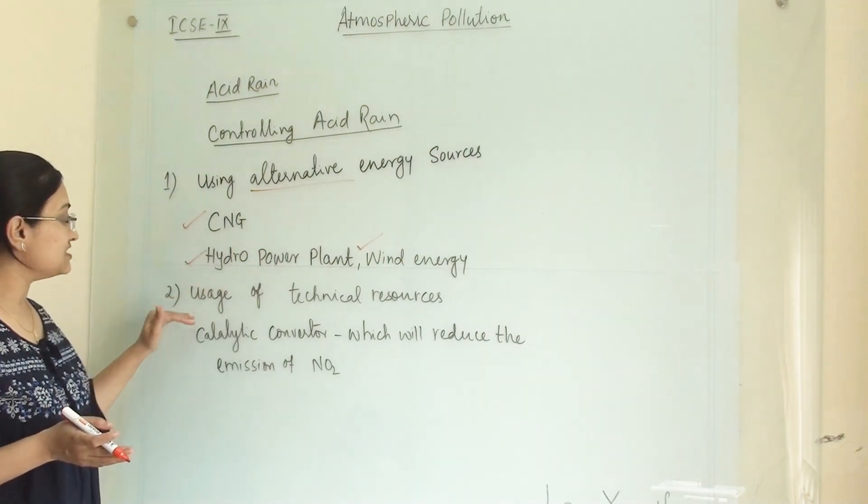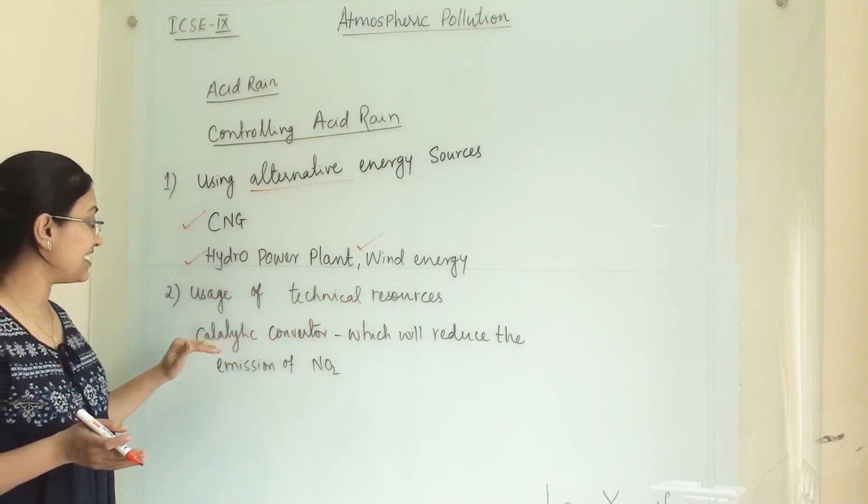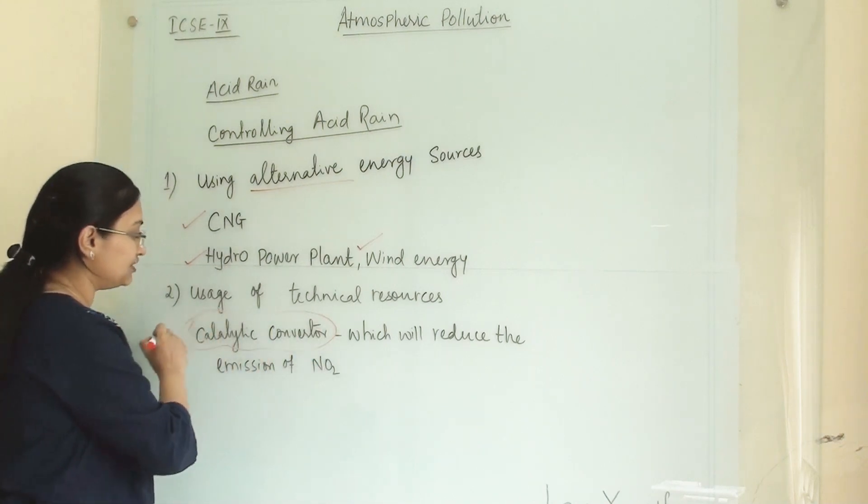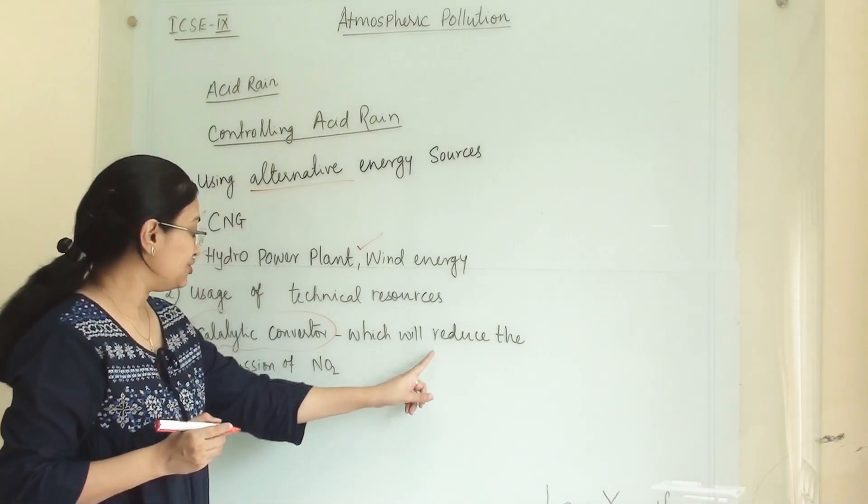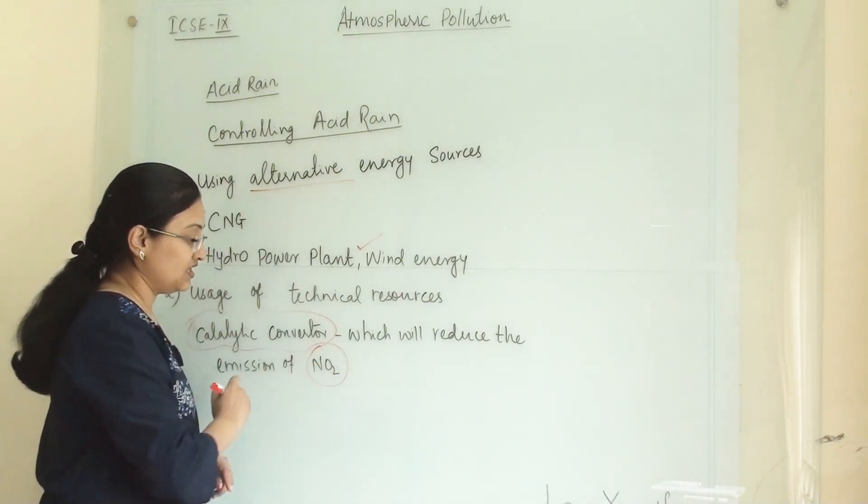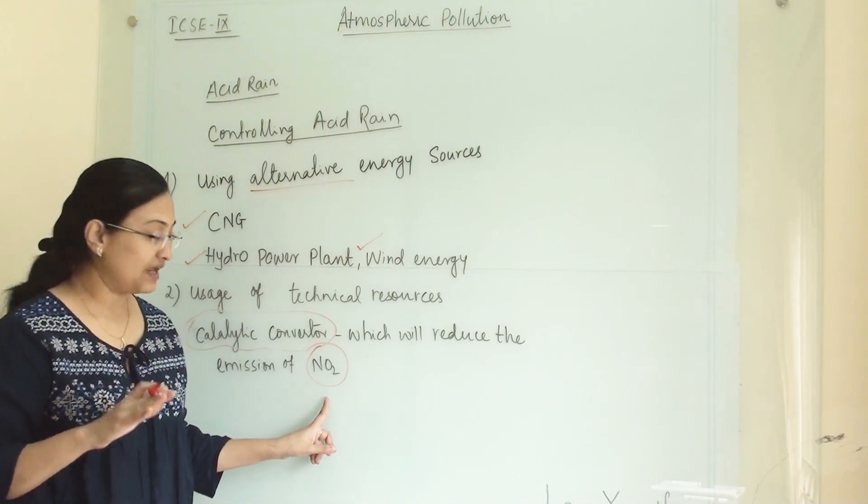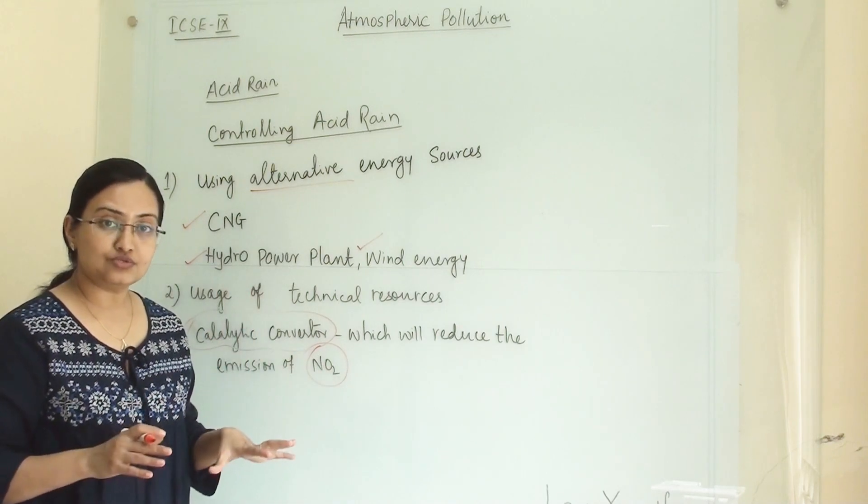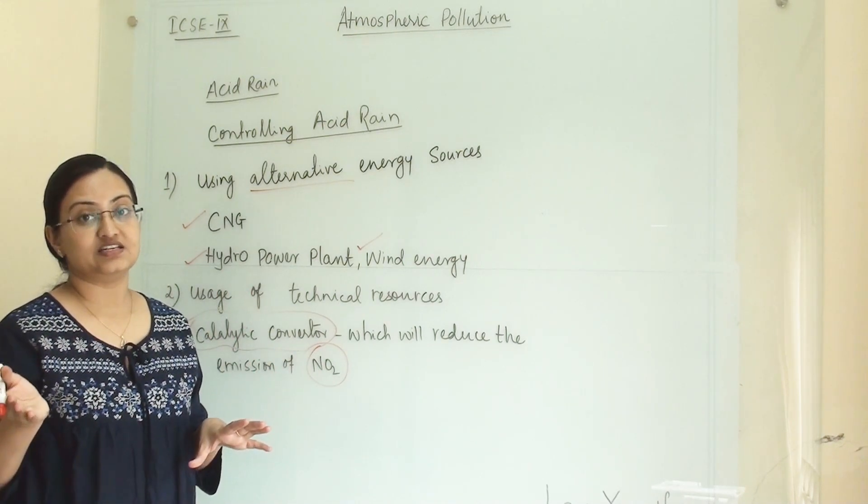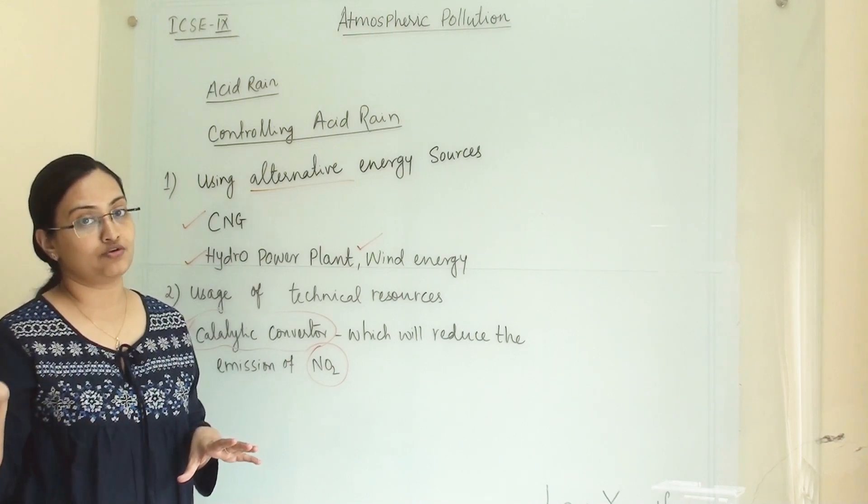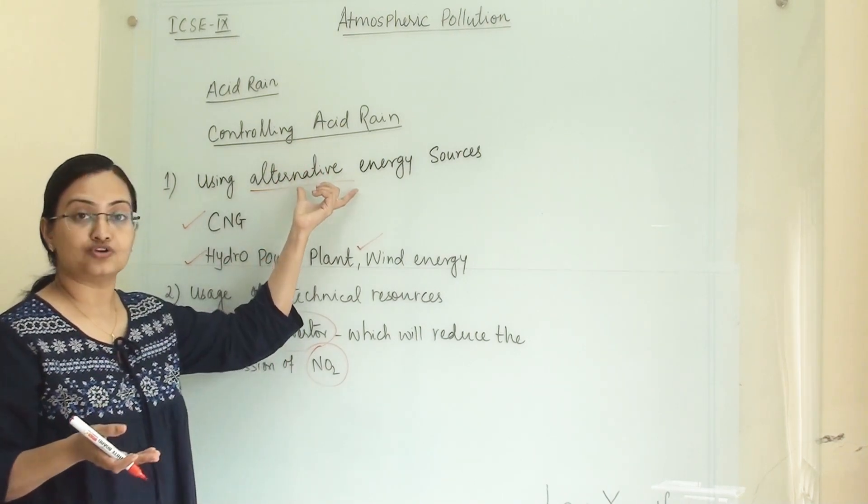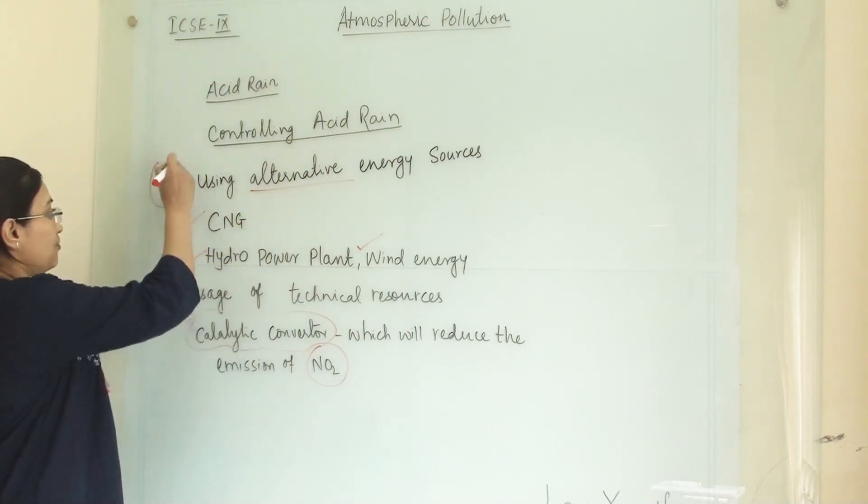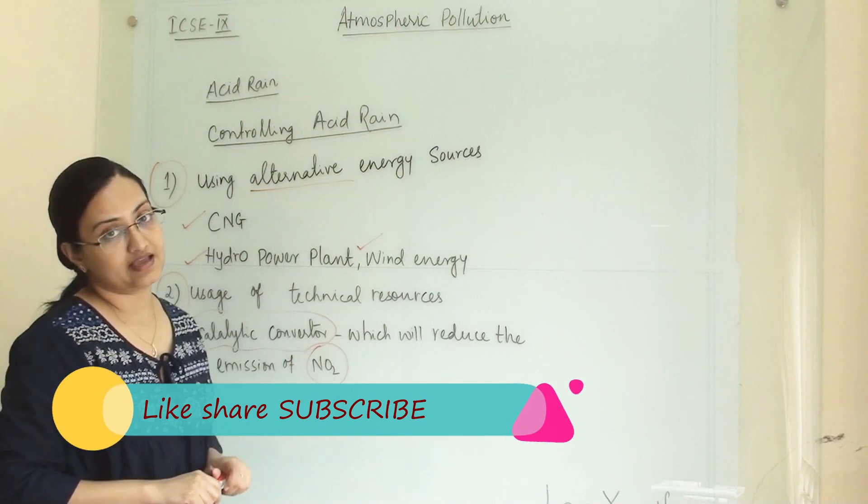Second is usage of technical resources. We have to use catalytic converters. What this catalytic converter will do is reduce the emission of NO2. Once it reduces the emission of NO2, nitrogen dioxide will reduce, and in turn nitric acid and nitrous acid will not form. So it will be beneficial to control the acid rain. These are two main points by which we can control acid rain.